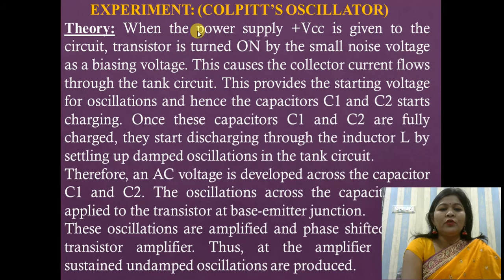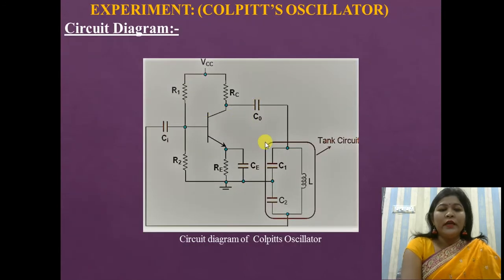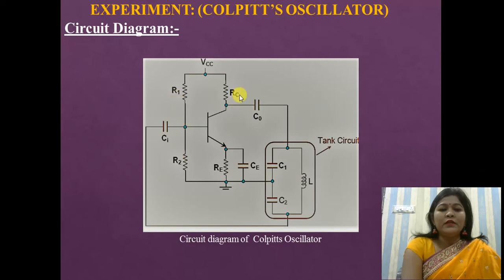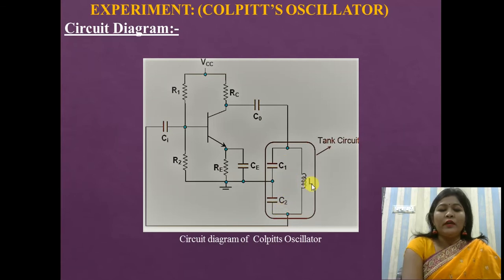When the power supply plus VCC is given to the circuit, this is the Colpitt's oscillator circuitry. Here this is the transistor, and these are the resistors R1 and R2, another resistor RC, and the emitter resistor RE. There are also capacitors including CIN, the output capacitor, and the tank circuit. In the Colpitt's oscillator, we use the combination of C1, C2, and L to form the tank circuit.